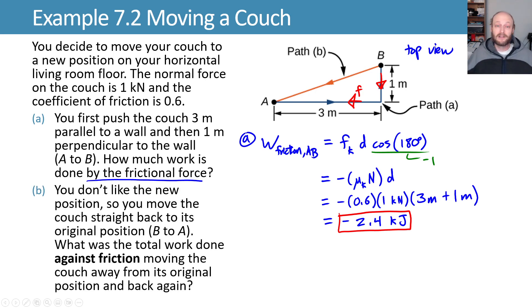We're not satisfied, though. We don't like it in the new spot, so we move it back. And rather than taking it straight to the wall and then sliding along the wall, we just move it straight back. What's the total work done against friction, moving the couch away from its original position and back again?